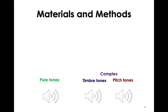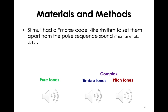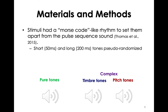We wanted to make the stimuli as salient as possible in a noisy scanner environment. We added a Morse code or techno-like rhythm to the stimulus sequence. We have tones of two different durations — 50ms and 200ms — and pseudo-randomized their presentation to get a techno-beat that lasted roughly 8 seconds. Within this time, the same tone was presented — the same pitch and timbre — just in varying durations. Then a new tone was presented for 8 seconds.